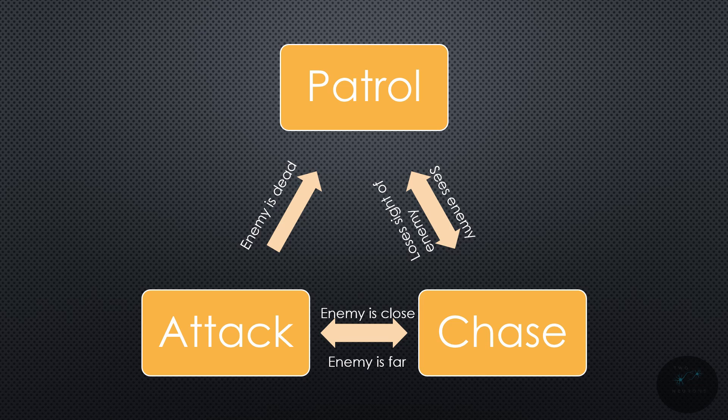So, it checks: can I see the enemy? Yes, I can — I'll chase it. Is the enemy nearby? Yes, I'll attack. Now, even there, there might be a limitation. What happens if the enemy is just nearby when they see them?